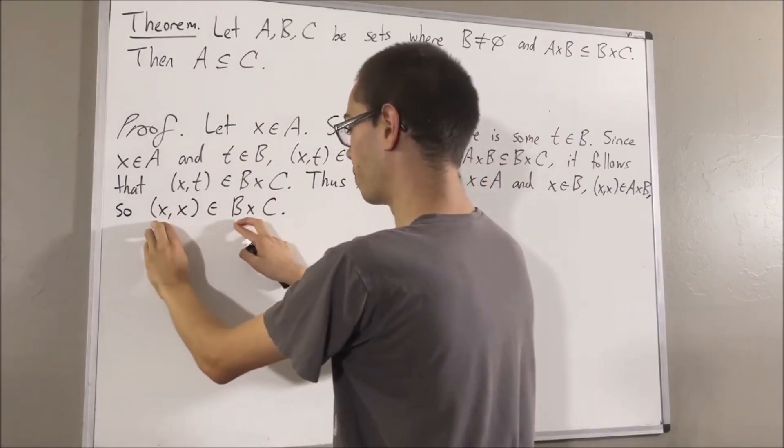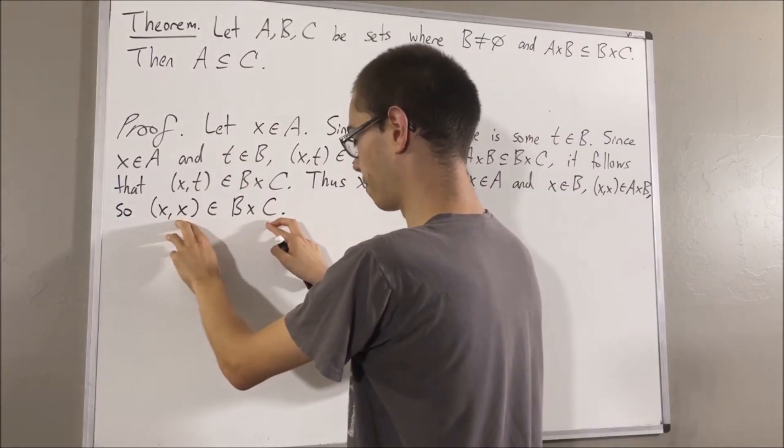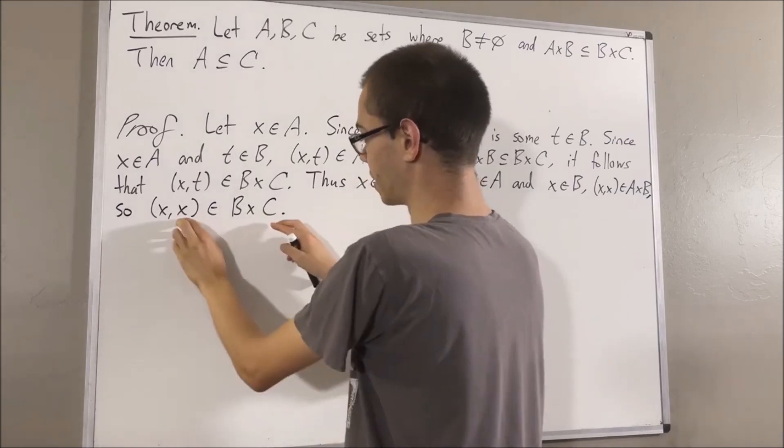And this means that X is an element of B, and X is an element of C. So in particular, we have that X is an element of C.